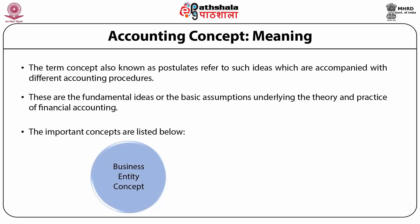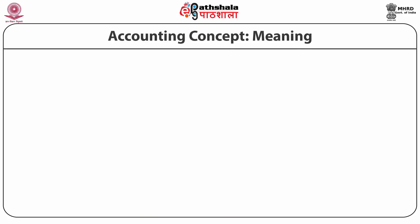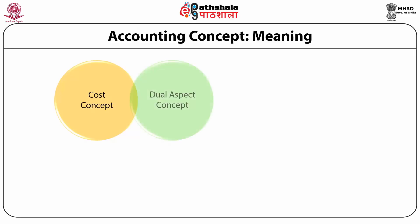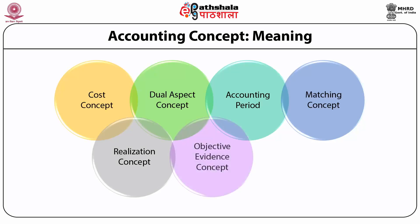The important concepts are listed below: 1. Business entity concept, 2. Money measurement concept, 3. Going concern concept, 4. Cost concept, 5. Dual aspect concept, 6. Accounting period, 7. Matching concept, 8. Realization concept, 9. Objective evidence concept, 10. Accrual concept.